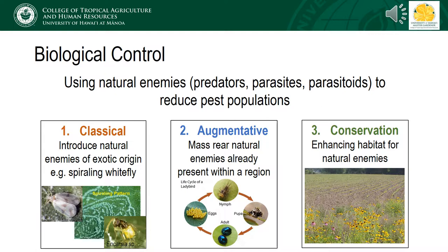Conservation biocontrol is when you actively enhance habitat for natural enemies, and is the strategy that will have the greatest positive effect on pollinators. Many predators, like wasps and ladybugs, also require carbohydrate and plant protein sources to survive, which they obtain from flowers. By incorporating insectary plants into the landscape, you encourage not only the beneficial groups, but support healthy local pollinator populations as well.